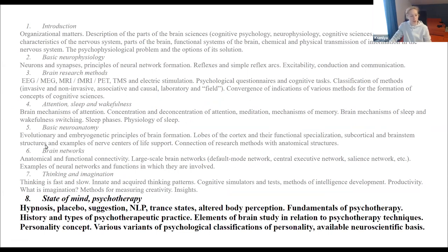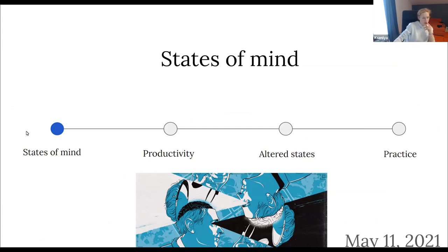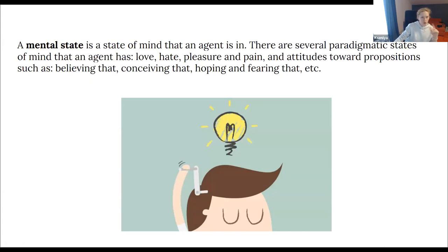Today we will discuss different states of mind. There will be three main parts and one short discussion: states of mind, productivity, altered states, and some practice. We use different terms — states of mind, mental states, states of consciousness — to define almost the same thing.